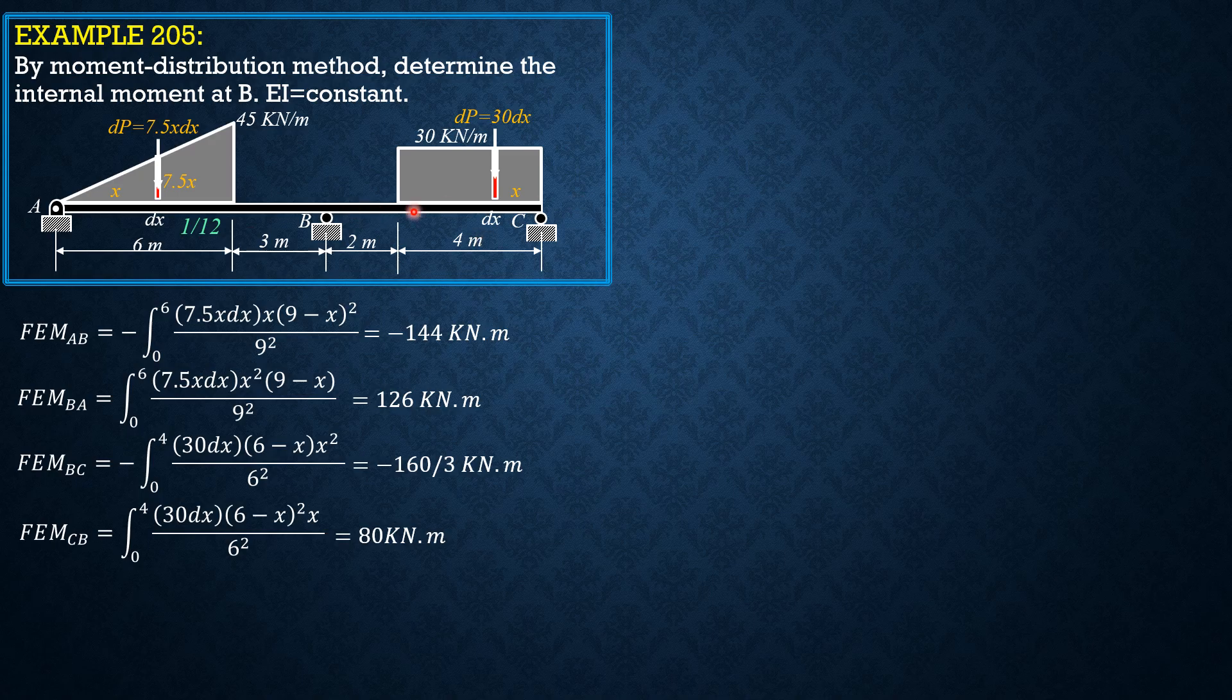Likewise, for BC or CB, the stiffness is, because the far end has zero moment at C, it is modified by multiplying three-fourths. So three-fourths of 1 over 6 is 1 over 8.